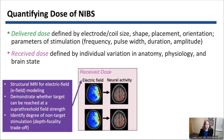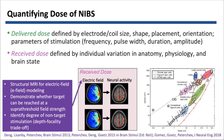We have tools that allow us to quantify, for example, the electric field using structural MRI to model and simulate the electric field. There are also new approaches to image the electric field by imaging the magnetic field generated by the electric field generated in the brain. This can be very useful in demonstrating whether a target can be reached and identifying the degree of non-target stimulation. There's a fundamental depth-focality trade-off — here you're seeing different TMS coils modeled with depth on the x-axis and degree of spread on the y-axis.